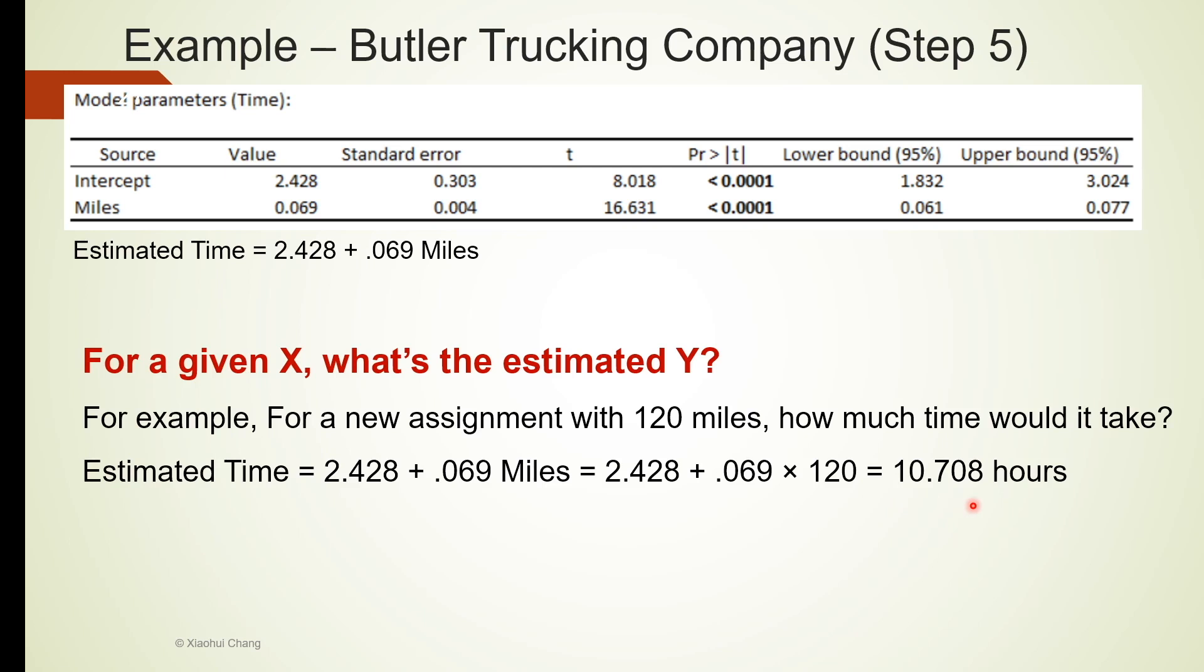This estimated equation only works for assignments of this particular trucking company. If we are talking about another assignment at a different company, the slope and the intercept are probably different, so we cannot plug these numbers in the equation anymore. Also, if x is outside the range of x in our data, we may not be certain this linear relationship will still hold the same. For example, if we are looking at another assignment with miles equals to 500, that's a cross-country assignment. This linear relationship between miles and time we discovered using short assignments may not be the same for cross-country assignments.